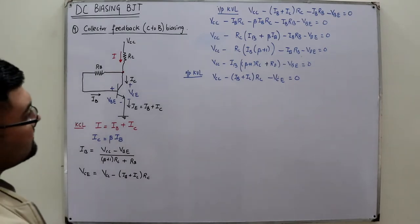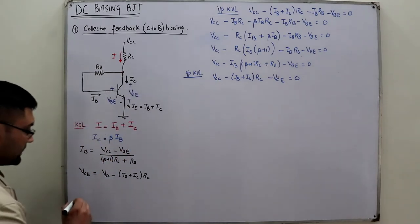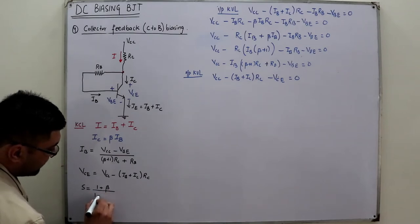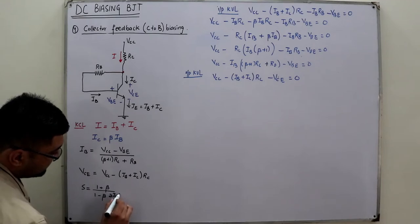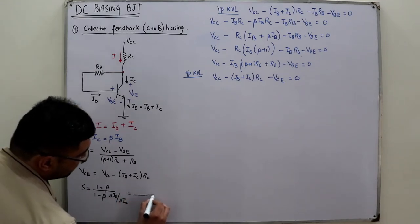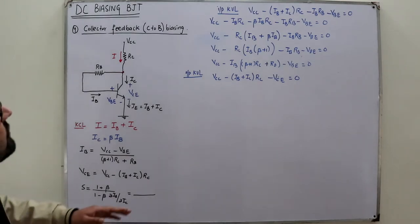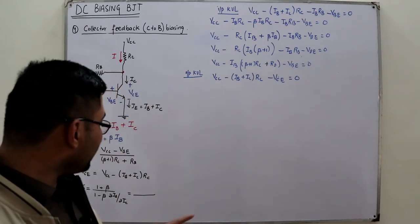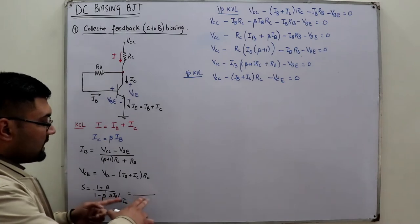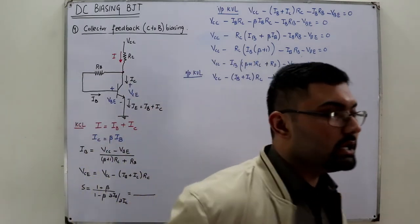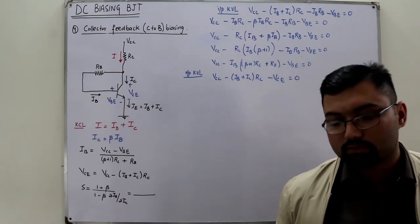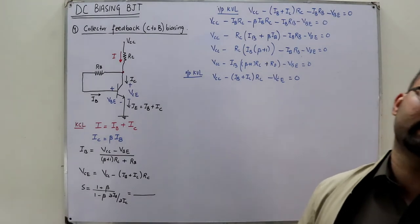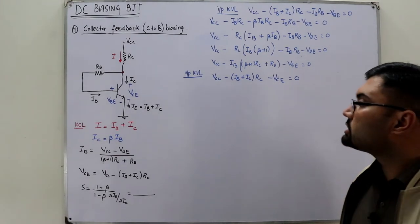The stability factor S = (1 + β) / (1 − β·(dIB/dIC)) is your homework. Take the input KVL equation, differentiate with respect to IC to find dIB/dIC, substitute into the formula, and post your answer in the comment section. It doesn't matter if it's wrong.